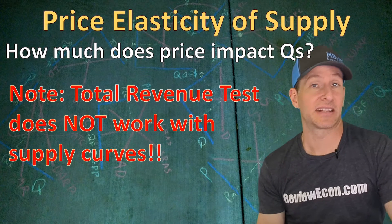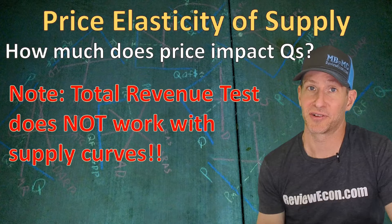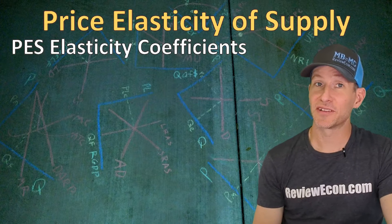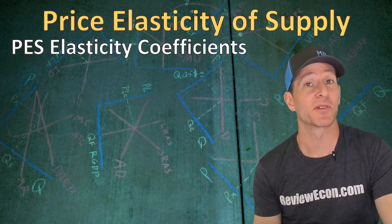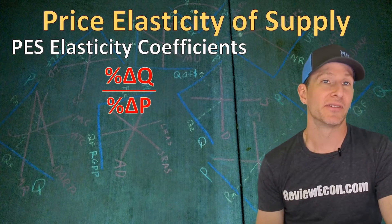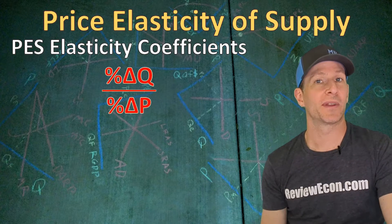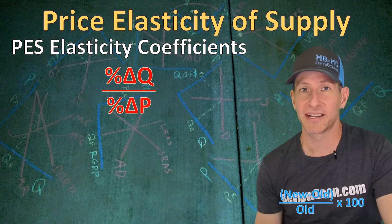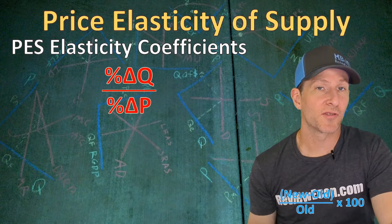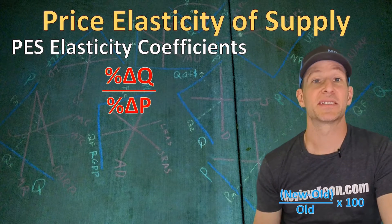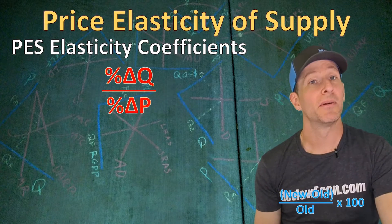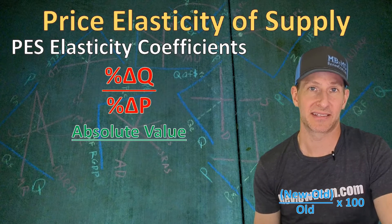That's because the upward sloping supply curve means that total revenue is always going to increase as price increases. When it comes to price elasticity of supply, we are going to be calculating our coefficients. The formula is the same as it was with price elasticity of demand: the percentage change of quantity supplied divided by the percentage change of price. The preferred formula for determining percentage change is new minus old divided by old times 100 — that's called the endpoint method. Supply curves are always going to have a positive price elasticity coefficient, but it's the absolute value we look at.